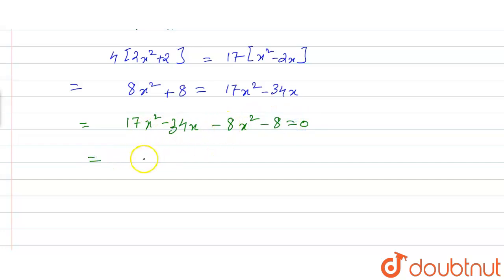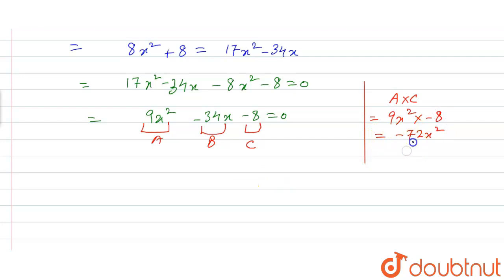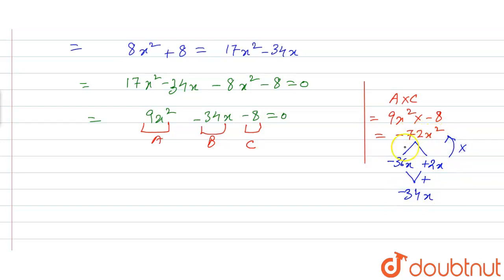So we have 9x² - 34x - 8 = 0. For factorization, let a = 9, b = -34, c = -8. Splitting the middle term: a × c = 9 × (-8) = -72x². We need two terms that multiply to -72x² and add to -34x, which gives us -36x + 2x.